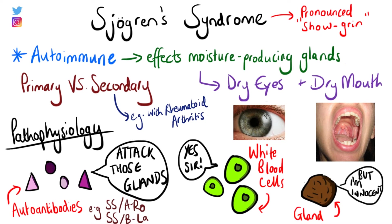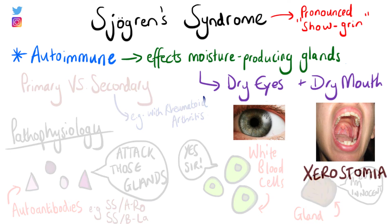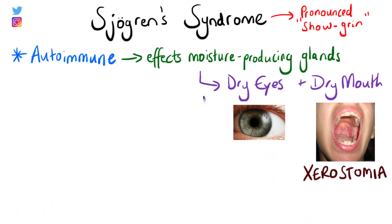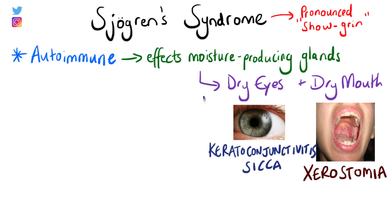Eventually chronic inflammation develops in the gland, leading to reduced function. In the salivary gland, reduced saliva output leads to a condition called xerostomia, meaning dry mouth. In the lacrimal glands of the eye, reduced lubrication results in dry eyes, known as keratoconjunctivitis sicca.